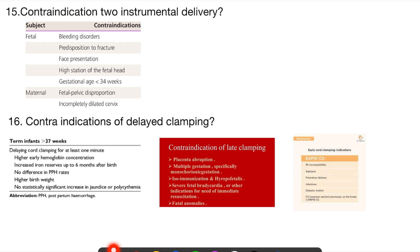Coming to contraindications of delayed clamping, first of all we need to understand why we do delayed clamping and not early clamping. Usually, delayed cord clamping will allow blood to go into the baby so that there will be high early hemoglobin concentration in the baby, and that can maintain iron reserves up to six months after the birth.